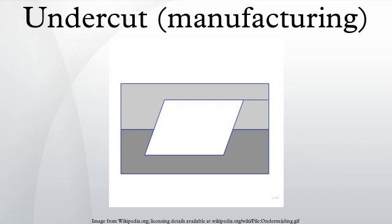but require a side action or side pull. This is an extra part of the mold that moves separately from the two halves. These can increase the cost of the molded part due to an added 15-30% cost of the mold itself and added complexity of the molding machine.